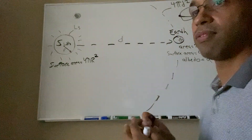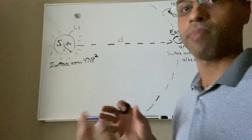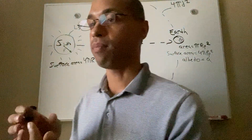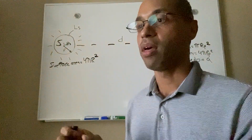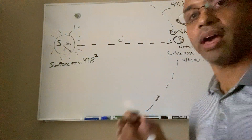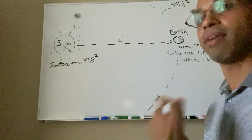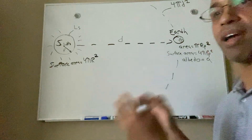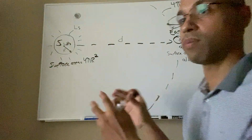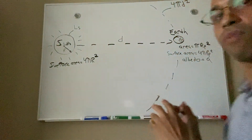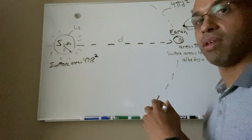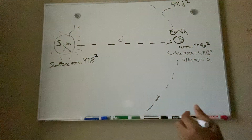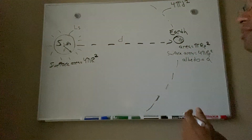Now to get the energy balance — what we're trying to find is that the absorbed sunlight must equal the thermal energy radiated back by the planet to space. That's the equation we want to solve: the left-hand side is the absorbed sunlight and the right-hand side is the emitted energy to space.